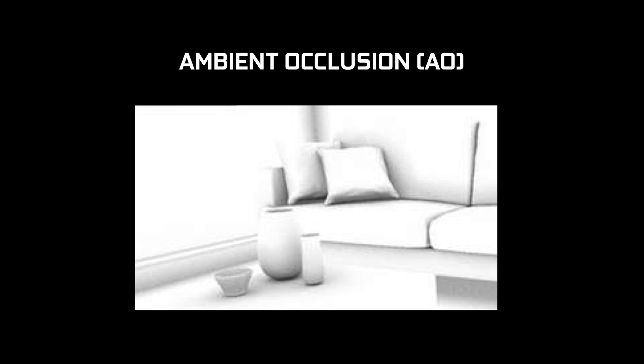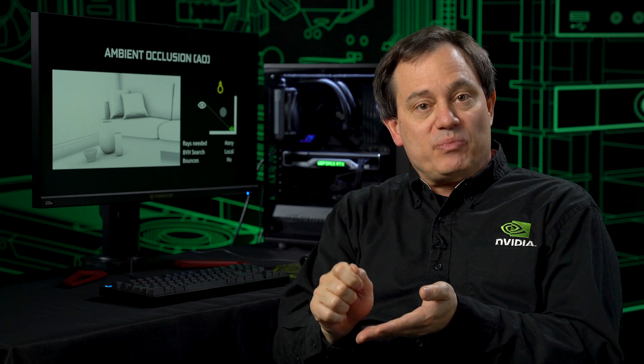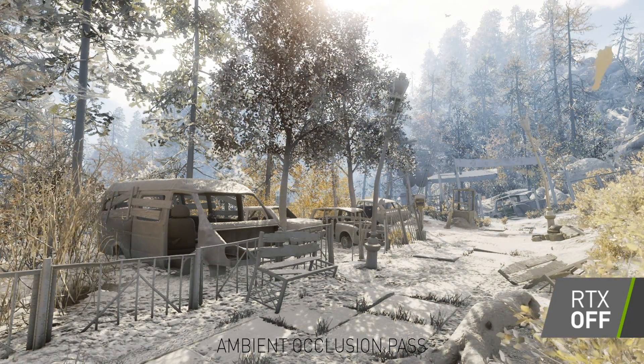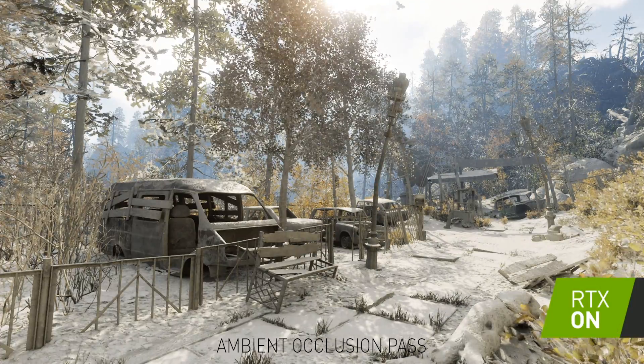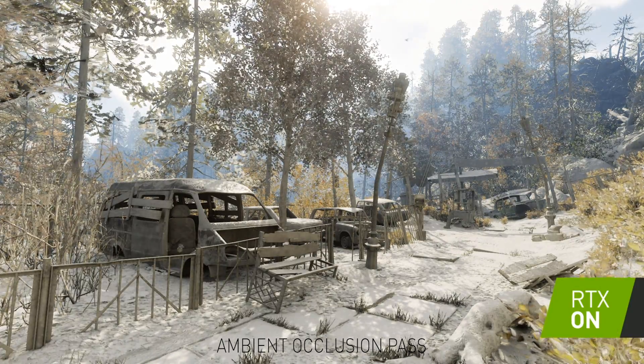A common graphics effect is called ambient occlusion — that kind of darkening that you get in the cracks and crevices in games. You shoot a fairly large number of rays but in a fairly local region into the BVH. So while there are a lot of rays, because they're not doing a lot of bounces and they're in a small region, the performance impact for ambient occlusion can be relatively low. This is a really nice subtle effect that provides a kind of grounding to objects and scenes and brings out the depth of a scene.